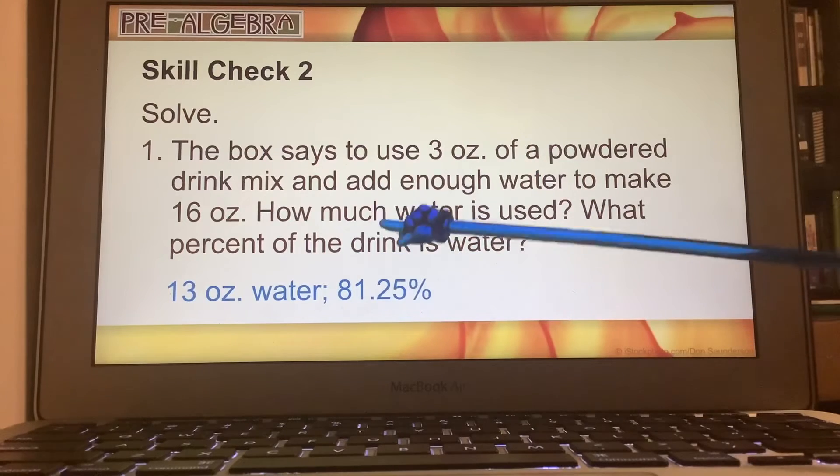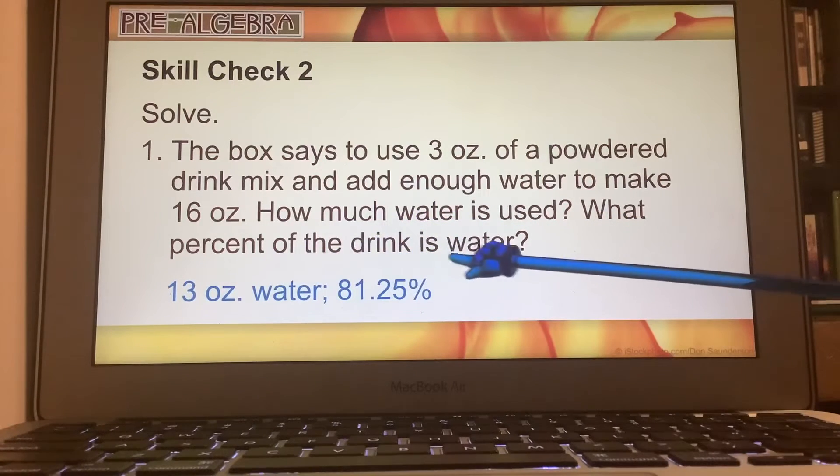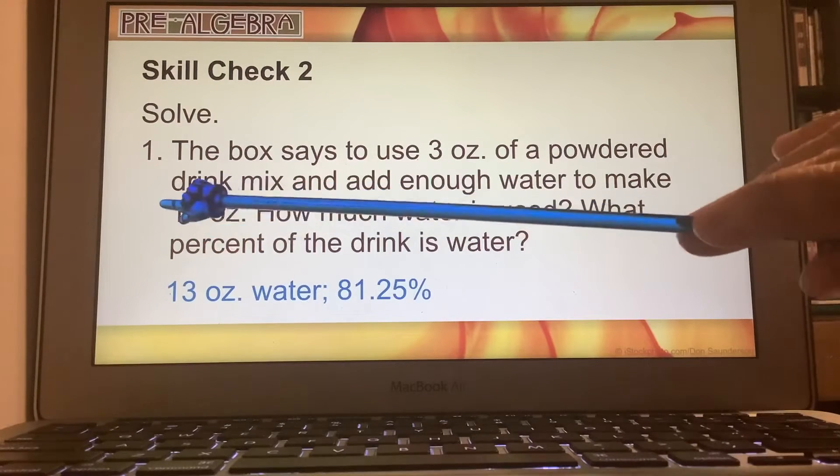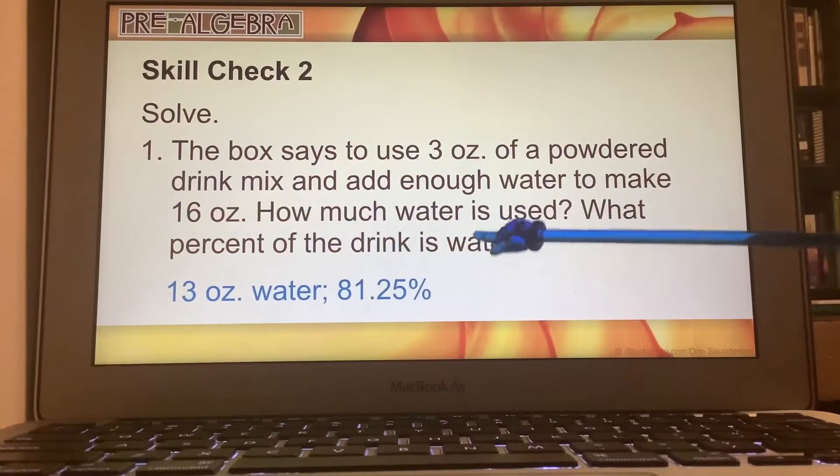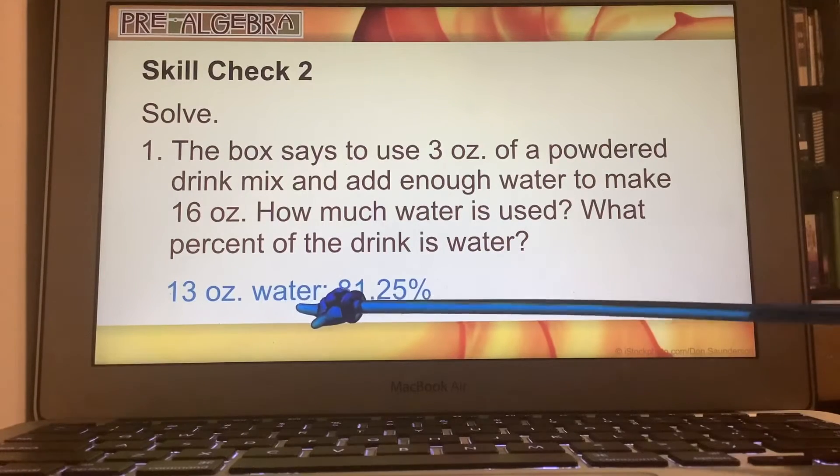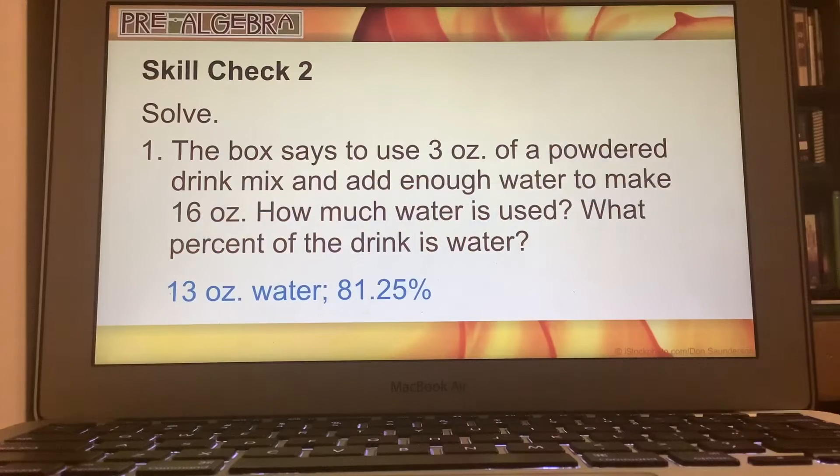And then what percent of the drink is water? Our total drink is 16 ounces. What percent is the 13 ounces of water out of the 16 ounces of drink? And that gave us 81.25%.